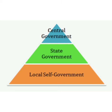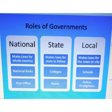The local self government is the government formed by the people of a village, town, or city. It takes care of the local problems and looks after the needs of the local people. At the village level, the local self government is known as the Gram Panchayat. Panch means five, so the word Panchayat means a council of five members. Villagers who are 18 years of age and above can vote to choose the members of the Gram Panchayat. An elected member is called the Panch.